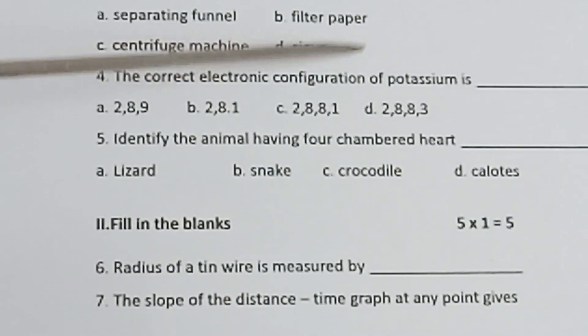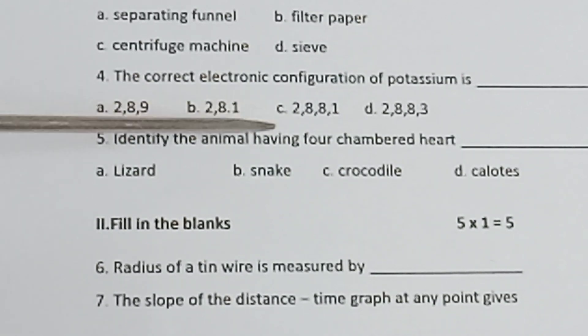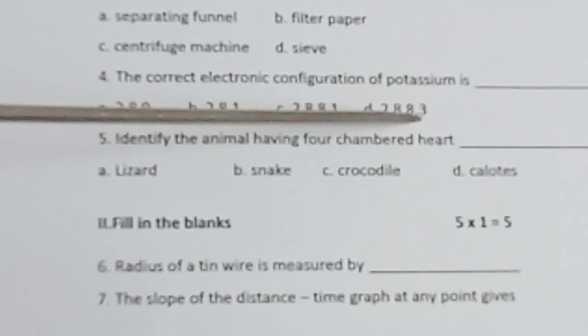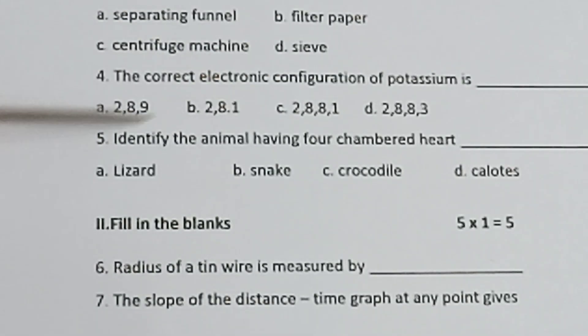Question 4: The correct electronic configuration of potassium is: A) 2,8,9, B) 2,8,1, C) 2,8,8,1, D) 2,8,8,3.